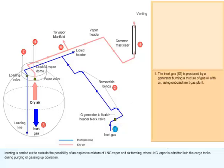The inert gas (IG) is produced by a generator burning a mixture of gas oil with air using onboard inert gas plant.